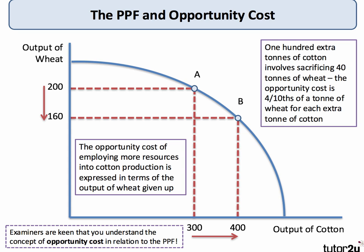So the opportunity cost of employing more resources into cotton is expressed in terms of the wheat output we have to sacrifice. In this case, 100 extra tons of cotton involves sacrificing 40 tons of wheat. The opportunity cost is four-tenths of a ton of wheat for each extra ton of cotton produced. That's how we show the basic opportunity cost.